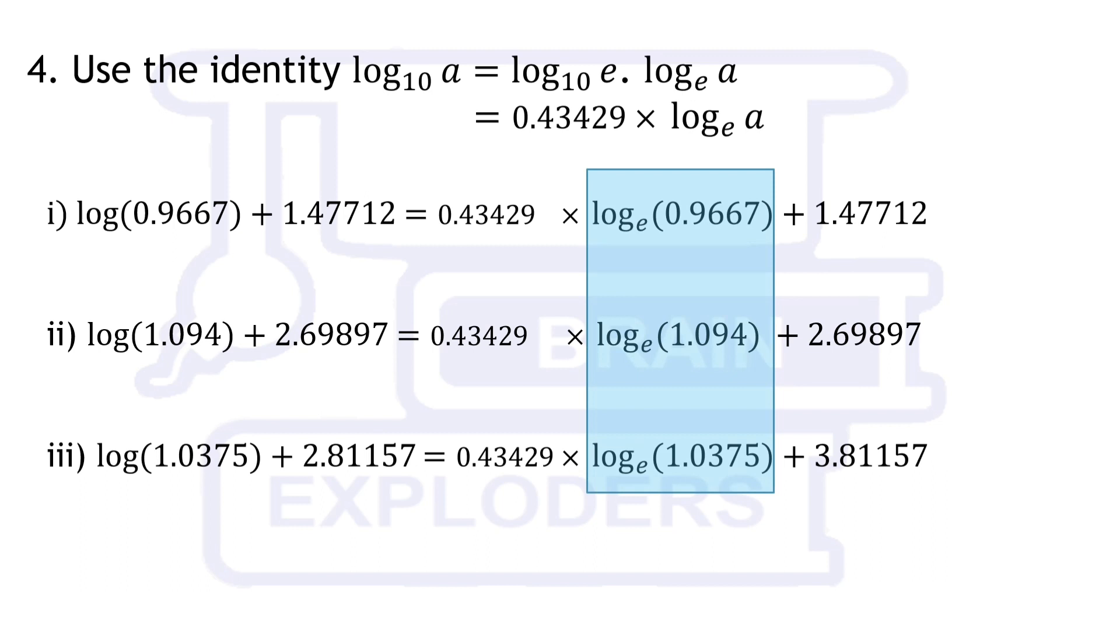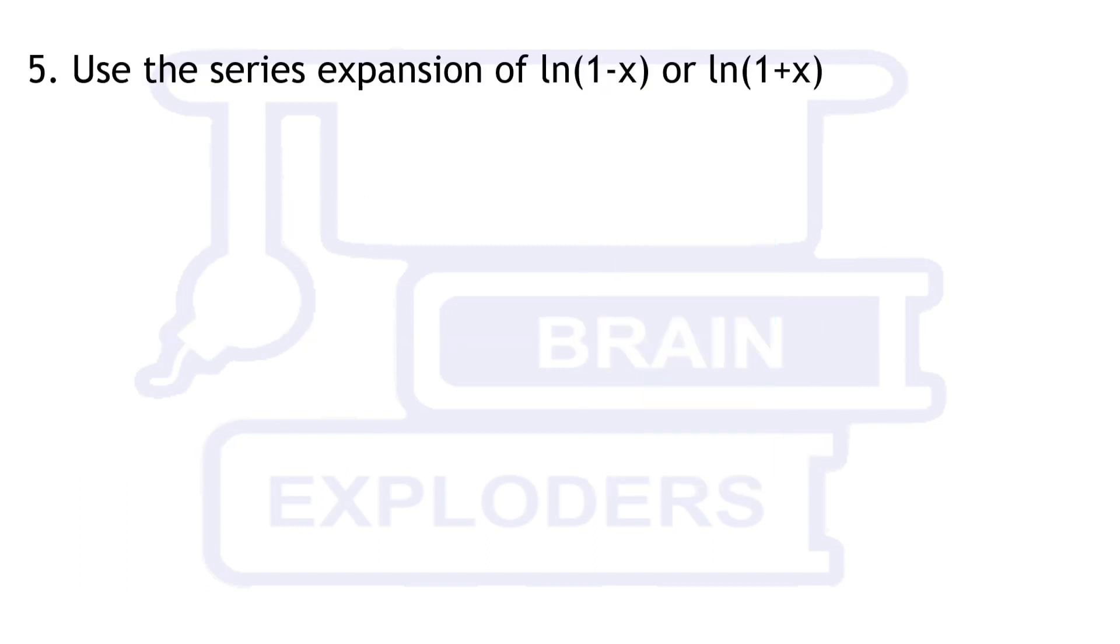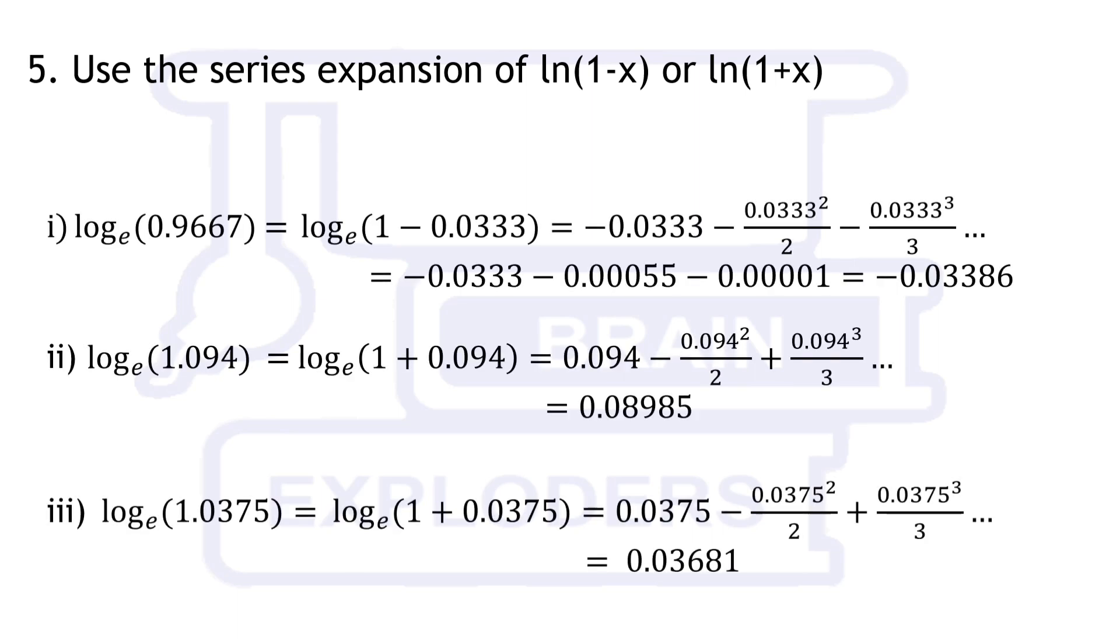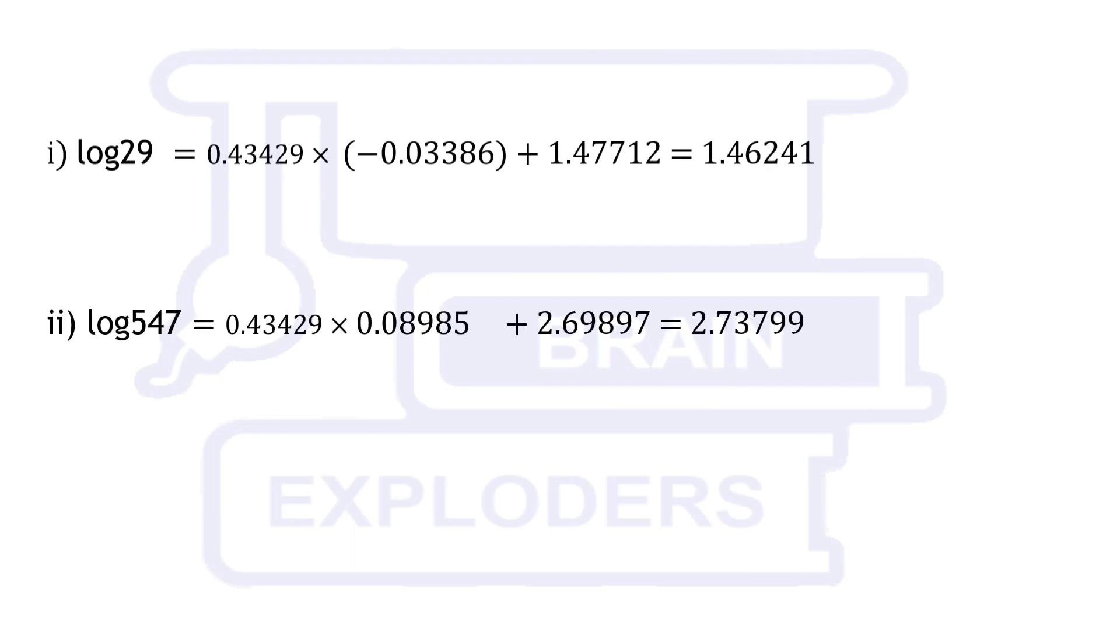Final step is using the series expansion of natural log 1-x and 1+x accordingly. First 3 terms of this series are sufficient to give the result accurate up to 4 decimal places, but if you want more accurate results then the values which you have learnt should also be learnt up to more decimal places and more terms of series expansion should be used. Finally we get log 29, log 547, and log 6723 equals to 1.46241, 2.73799, and 3.82775 which are accurate to get up to 4 decimal places.